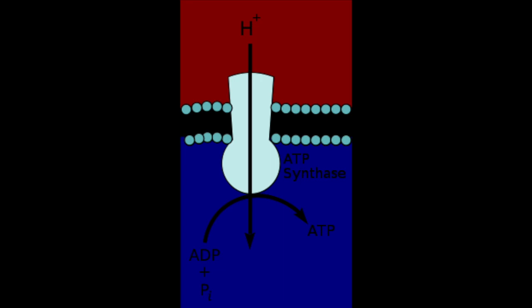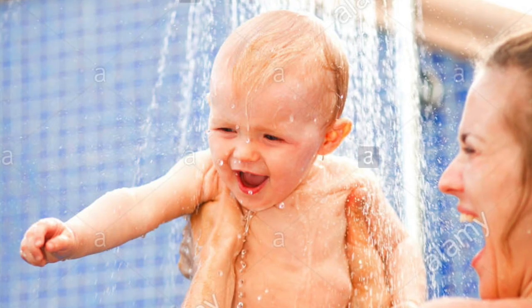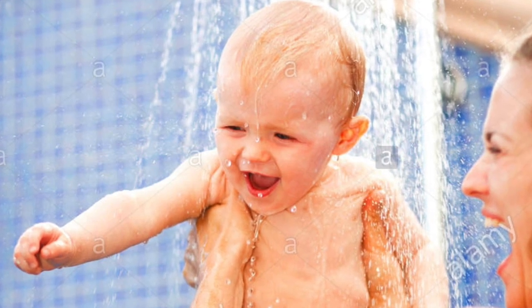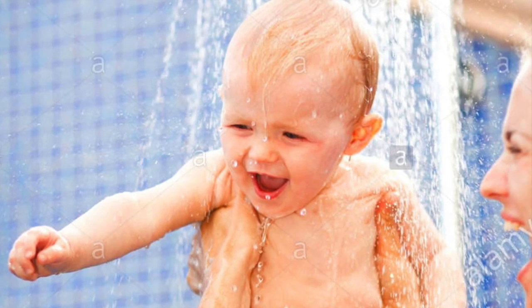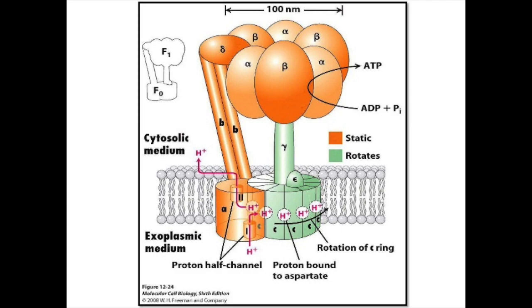What does the ATP synthase actually do? Just yanking your chain, young pups. When the hydrogen ions naturally diffuse down their gradient and flow through the ATP synthase — like water cascading upon the smooth, bare bottom of a newborn baby — they cause ATP synthase to essentially turn like a turbine, which adds phosphate groups to the ADP molecules, creating ATP. This happens over and over again until the hydrogen gradient returns back to normal.